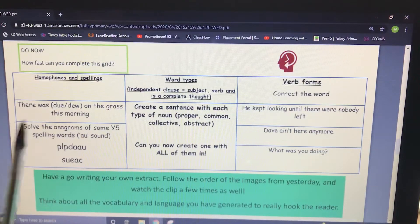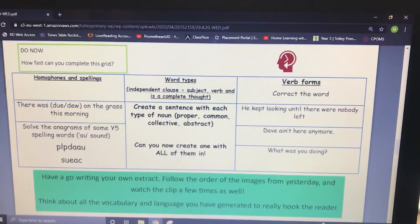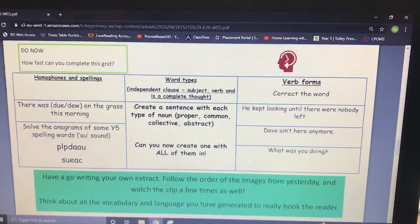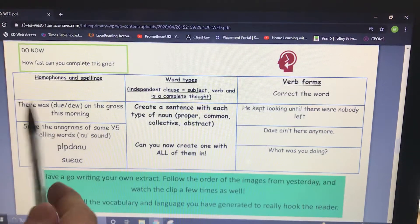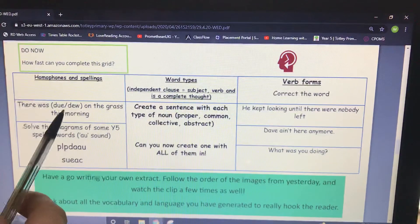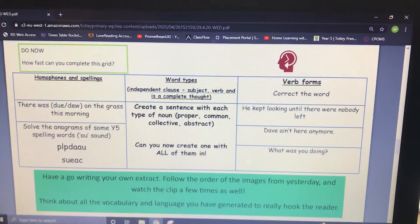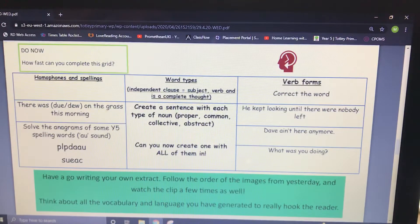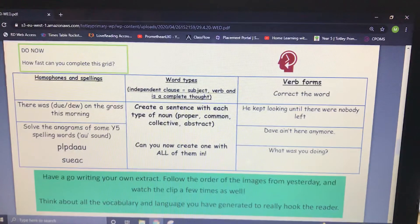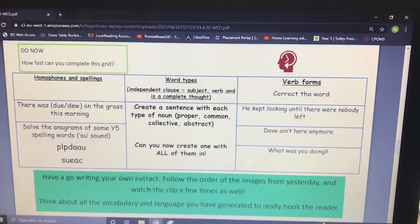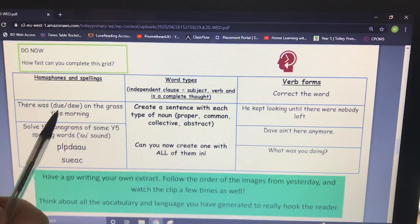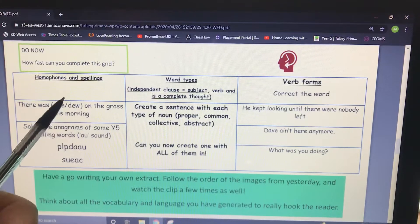Homophones and spellings. There was dew on the grass this morning. Well, there's not this morning, it is genuinely rain. But dew and due, you want that last one. It's the moisture you get in the morning on the grass when the grass feels wet. It's not necessarily because it's rained, it's just the temperature and the weather in the night. That dew is D-E-W here.